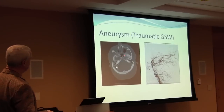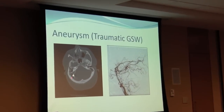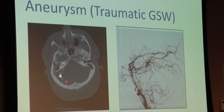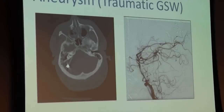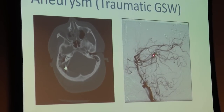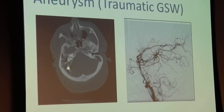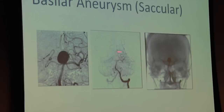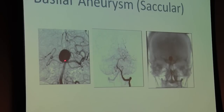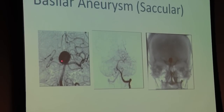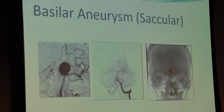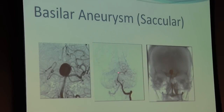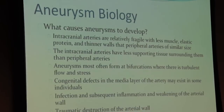Here's a traumatic gunshot wound — here's the pellet, and here's the resulting aneurysm. This is a saccular aneurysm — the ones we're really talking about today, the most commonly seen. Here you can see the basilar artery coming up, and at the top a big sac has formed rather than normal branching. After treatment, you can see the coil mass filling the aneurysm while the vessel now looks normal.